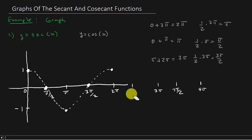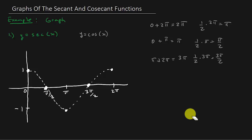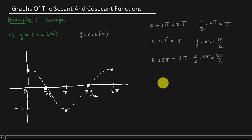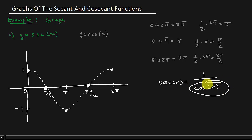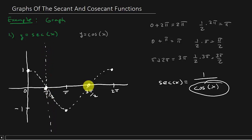I'll erase the extra period since we're graphing over just one period. Remember that secant x equals 1 over cosine x, so we're going to have vertical asymptotes where cosine x is zero. If cosine x is zero, we'd have 1 over 0 which is undefined. Cosine is zero at π/2 and 3π/2, so we'll have vertical asymptotes there — drawn as dotted lines.